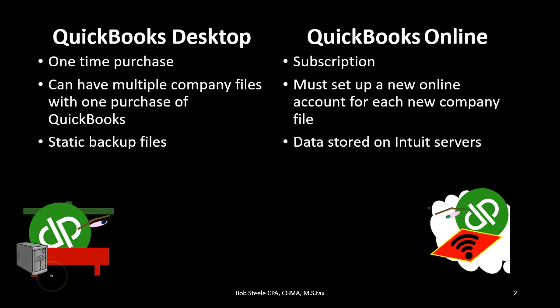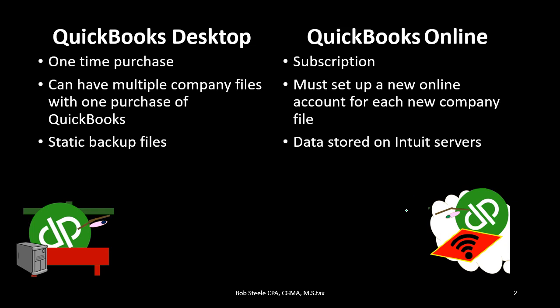Whereas if we have it on our desktop, if there's a problem with our desktop, we lose the data — so we need a way to back it up. We can have static backup files and back them up to another drive or to a cloud-based storage location. From a data storage standpoint, the online version is going to be on an Intuit server, and Intuit is probably more reliable than our backup system, even if we have a pretty good one.